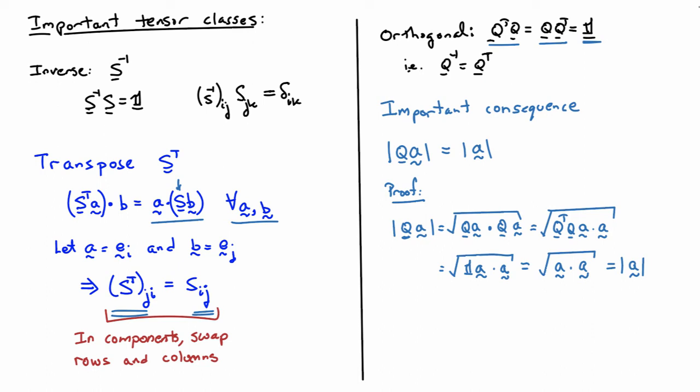That proof also illustrates the use of the transpose definition. To summarize, there are three important classes of tensors: inverses generated from tensors, transposes generated from tensors, and orthogonal tensors, which have the special property that their inverse equals their transpose.